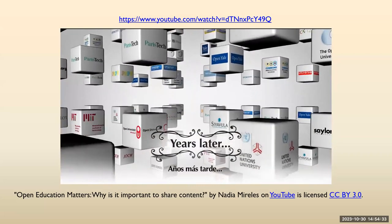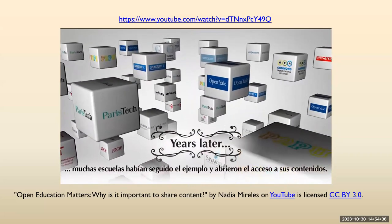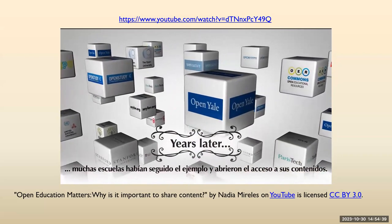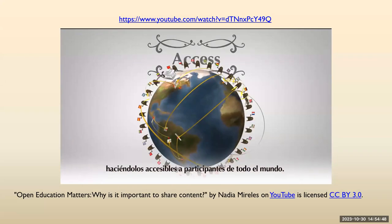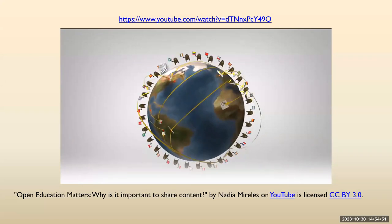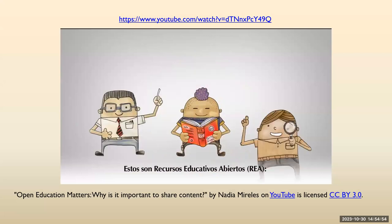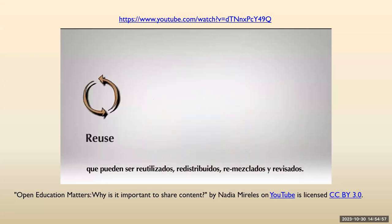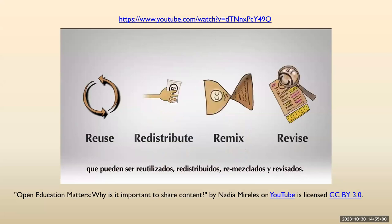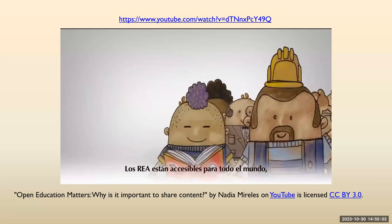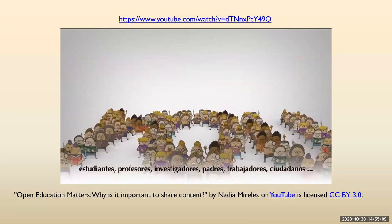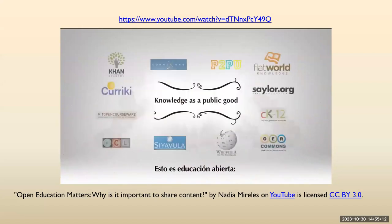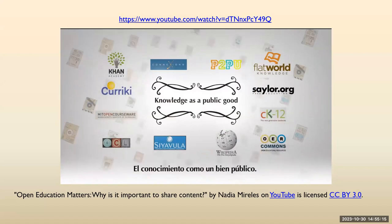Many schools had begun to follow the example and opened access to their content. Governments began promoting the use of open textbooks, and students began saving money on books. Other innovative universities began to open access to entire courses, making them available to participants from all around the world. These are open educational resources — teaching, learning, research resources that can be reused, redistributed, remixed, and revised. Open educational resources are accessible to everyone: learners, teachers, researchers, parents, workers, citizens. This is open education — knowledge as a public good.